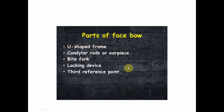These are actually the parts of the facebow. The first one is the U-shaped frame, then the condylar rods or earpiece, then the bite fork, then the locking device, and then the third reference point, which can be either a nasion-related assembly or the orbital point pin, and this differs in different types of facebows.